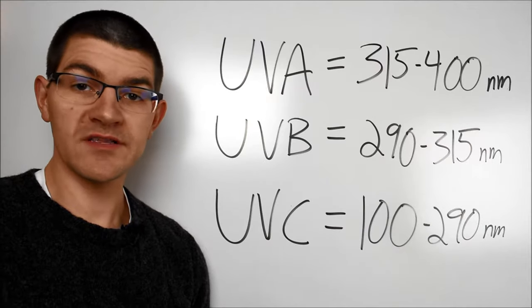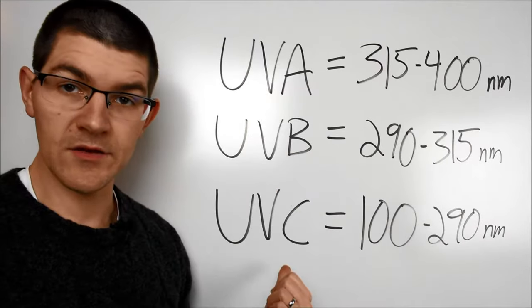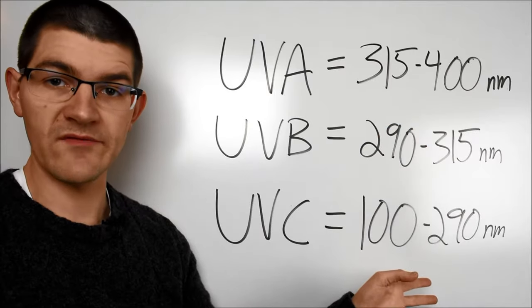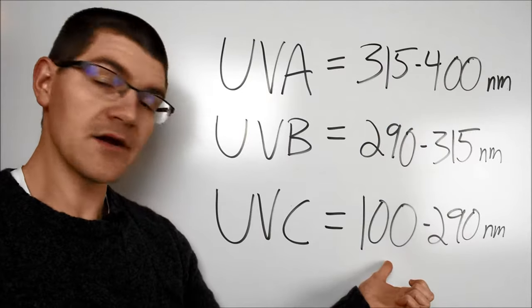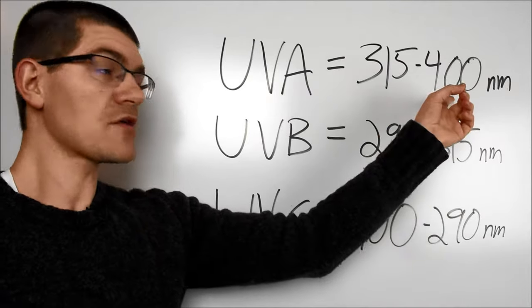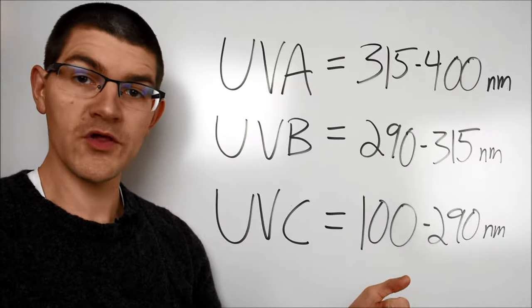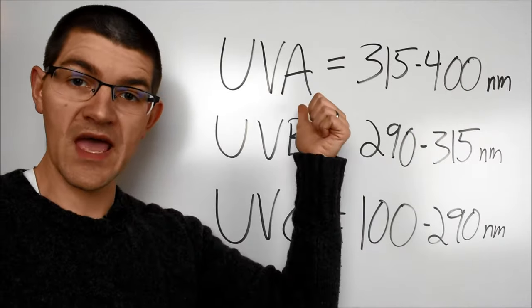There are three types of UV radiation we're concerned about: UVA, UVB, and UVC. And here you can see their relative wavelengths. You can see we go from about 100 nanometers in the UVC up to about 400 nanometers just before where humans start to see violets in the UVA.